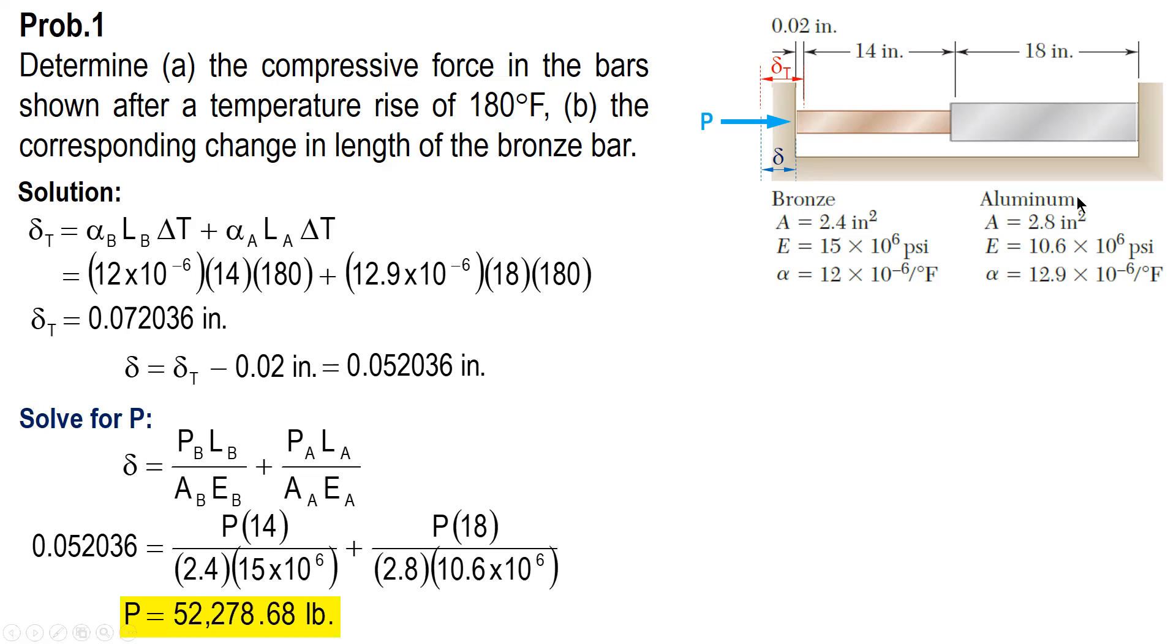Now, for bronze and for aluminum, the total change in length is the difference between thermal deformation and axial deformation for each member. Thermal deformation minus axial deformation of bronze plus thermal minus axial deformation of aluminum. The total is 0.02.